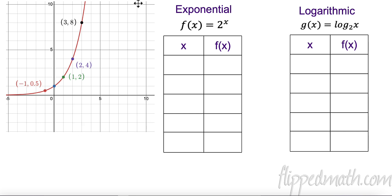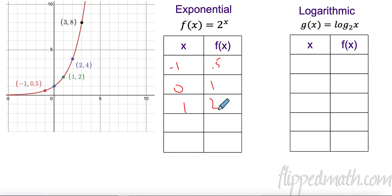Let's write some of these points out so we know what they are. We have negative one and one-half, then zero and one, the next one is one and two, two and four, three and eight. That is our exponential function with base two — remember that's key here.